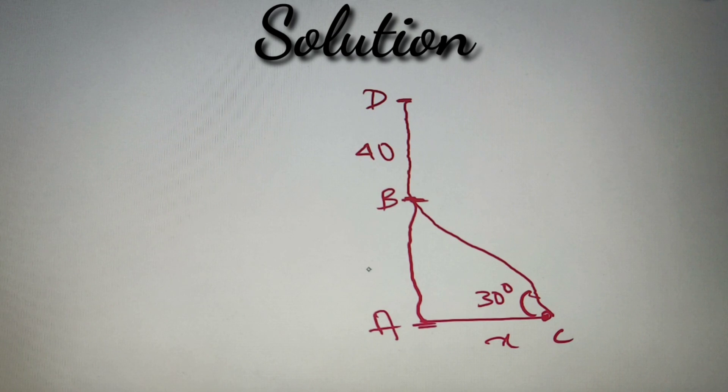And let us consider the length of the school building as y. Now we are also given that the angle of elevation from the point C to the top of the flag is equal to 60 degrees. So if we connect the line of sight, we will get this angle as 60 degrees.